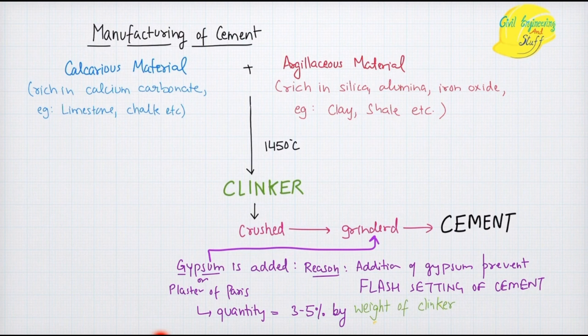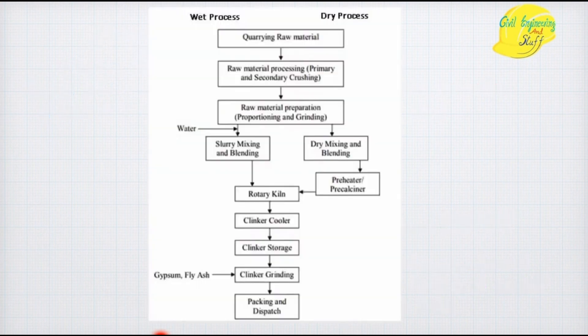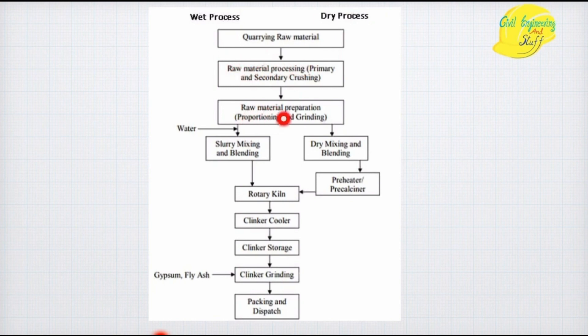This manufacturing process can be divided into two categories: the first is the dry process and the second is the wet process. In the dry process, the whole manufacturing is done without any addition of water, while in the wet process, the calcareous and argillaceous raw materials are combined together.